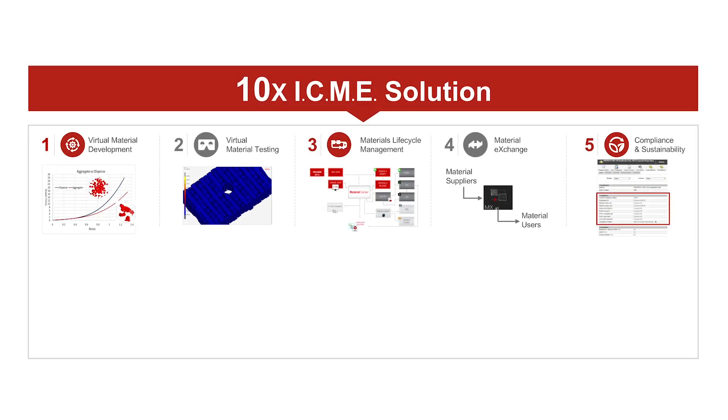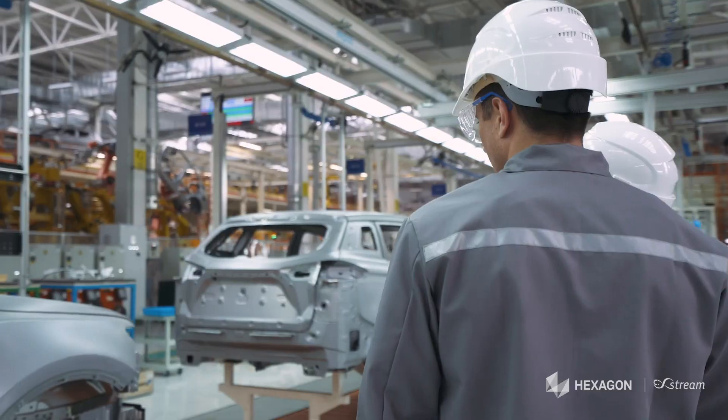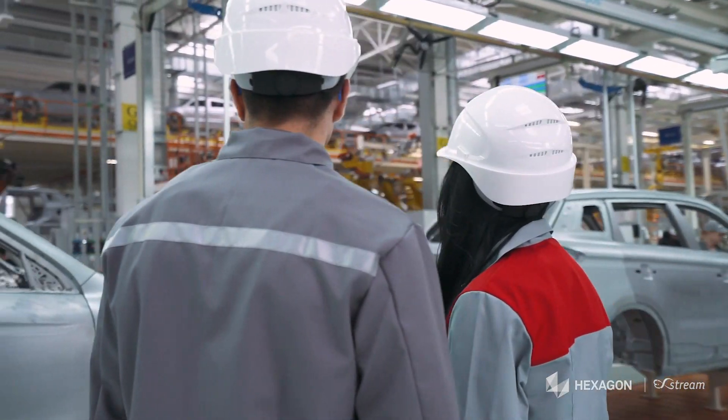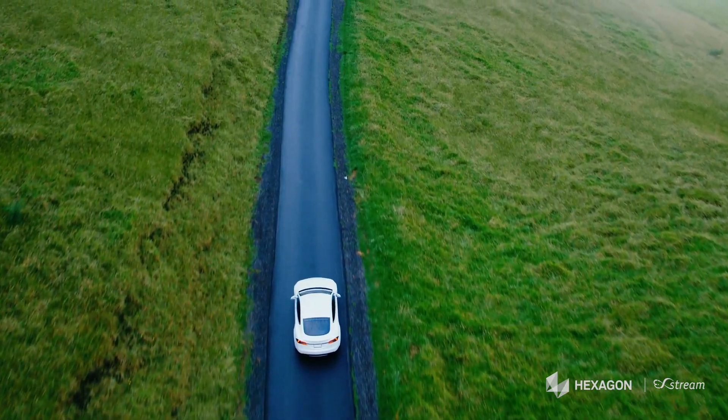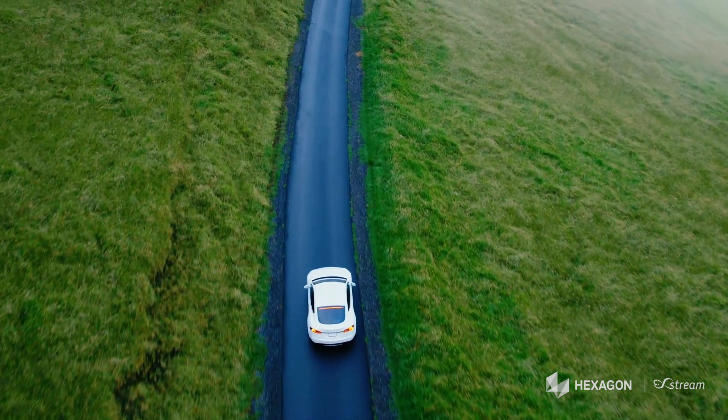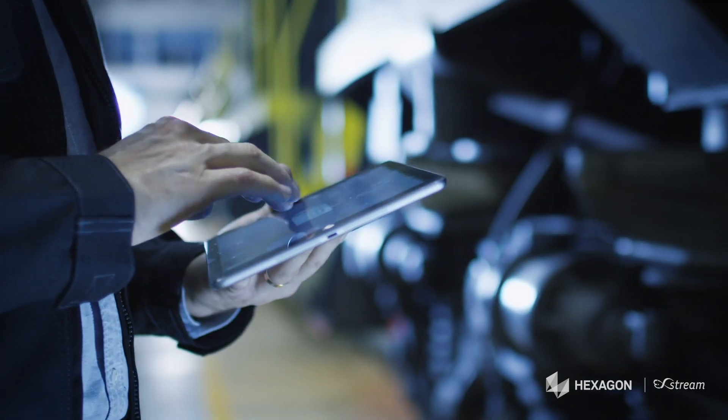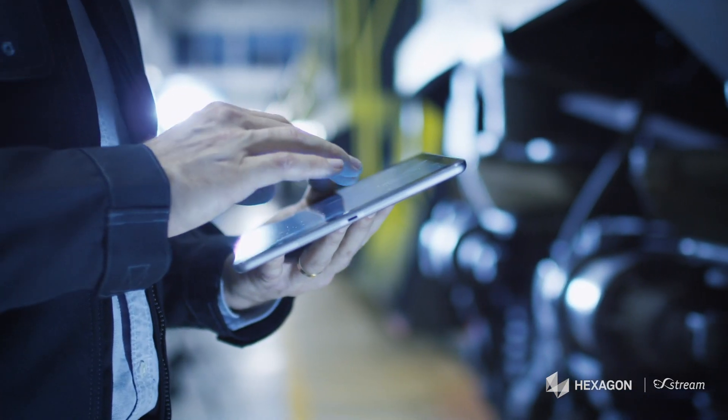The fifth component is material compliance and sustainability. Today, it's very important to make sure that your product is, one, compliant with regulation, and two, sustainable. We own material data. We have tools and solutions to create materials, to characterize them, to virtually test them. It's natural for us to study the compliance and sustainability of the materials. This is done with a strong partnership with compliance companies and with companies like iPoint out of Germany.